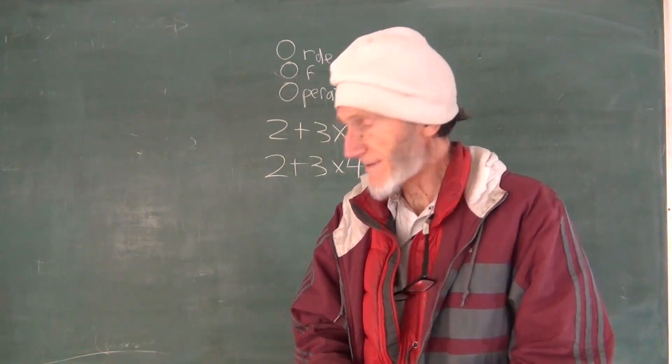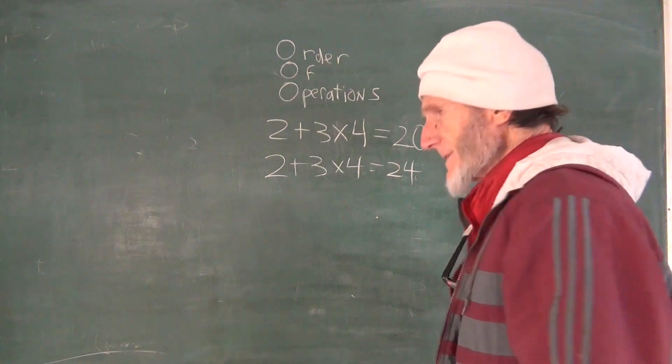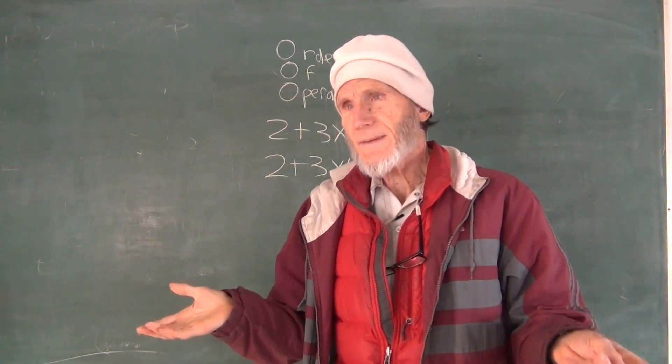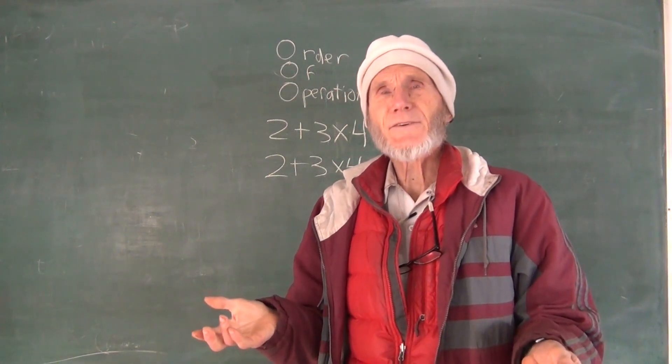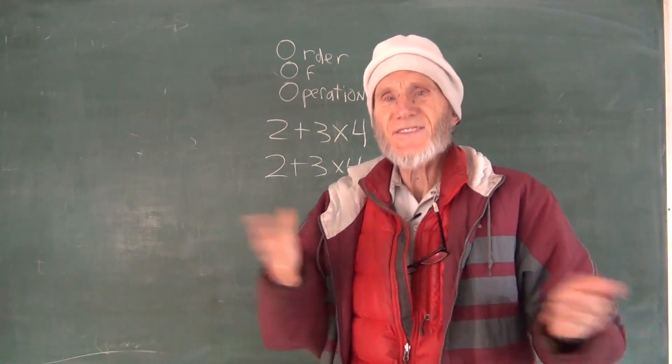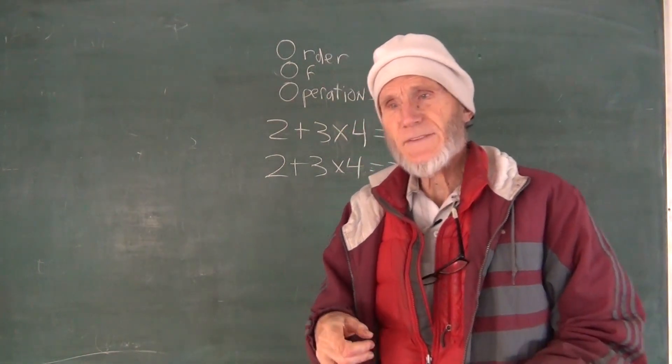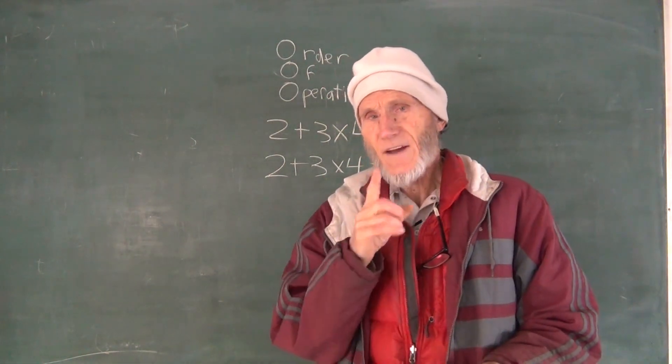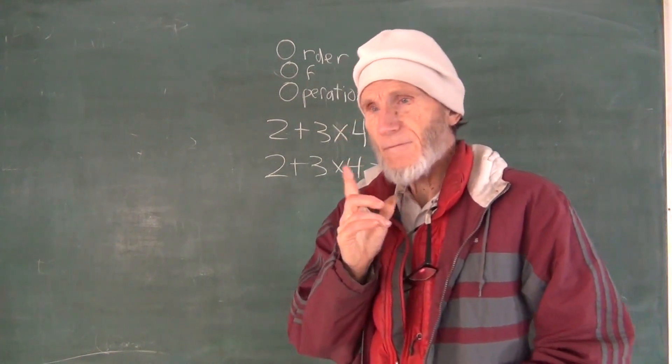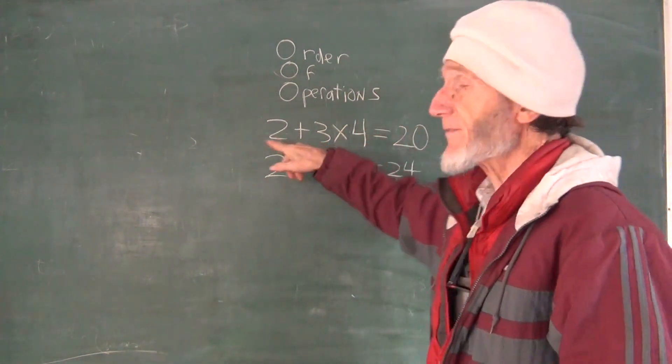So mathematicians a long time ago decided, hey, we just have to make some rules. And they're not anything like you have to do it, but let's just all do the same rules. And that's why they're called order of operations. And the operation order is, well, you do multiplication before you do addition.